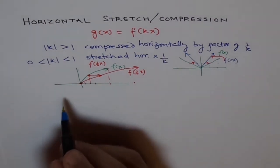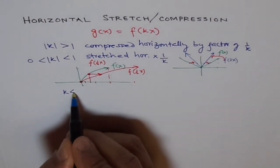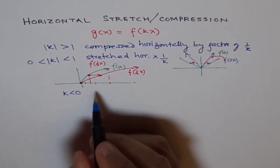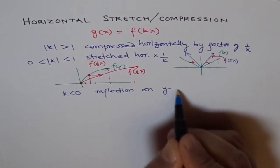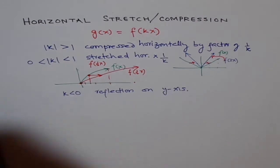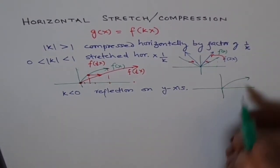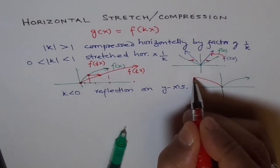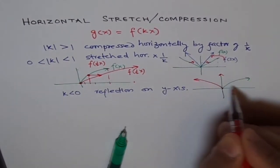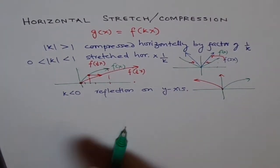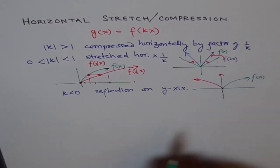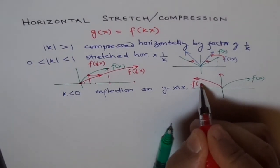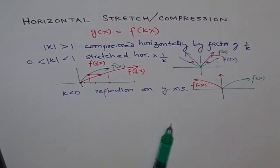Now, what happens if k is less than 0 — that means k is negative? In that case, we have a reflection on the y-axis. If I have a graph like this as my original graph, it gets reflected like this on the y-axis. So if this function is f(x), then this is f(−x). That is what we mean by horizontal compression, stretch, and reflection.